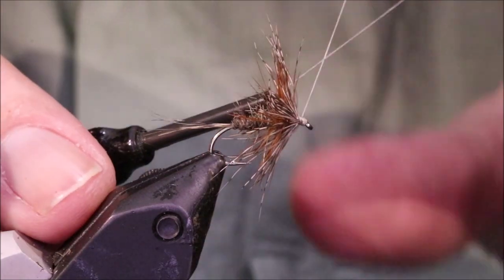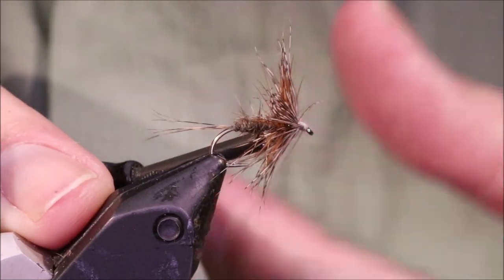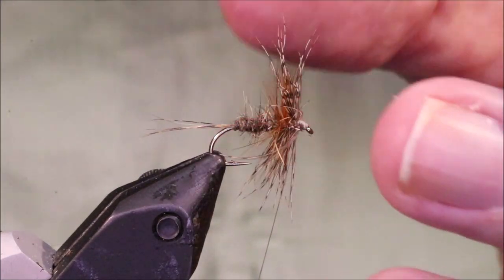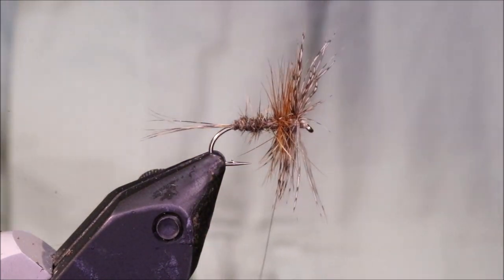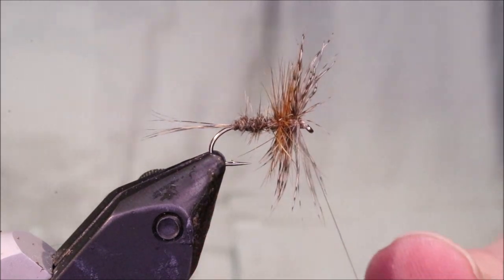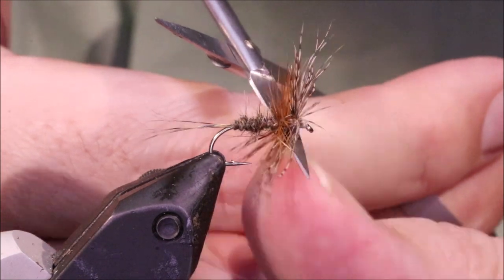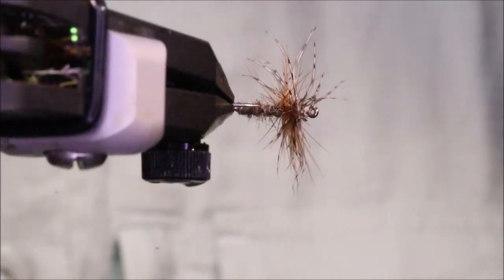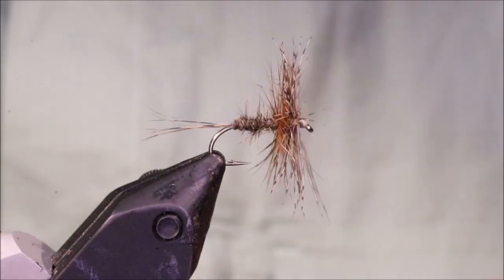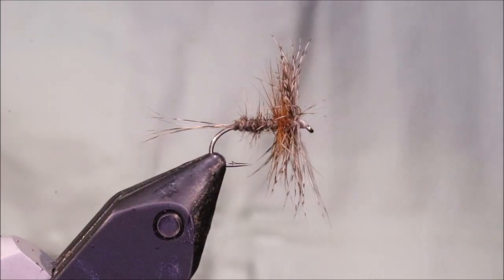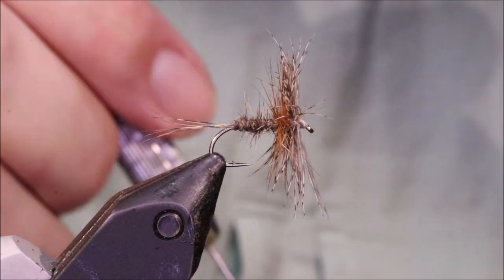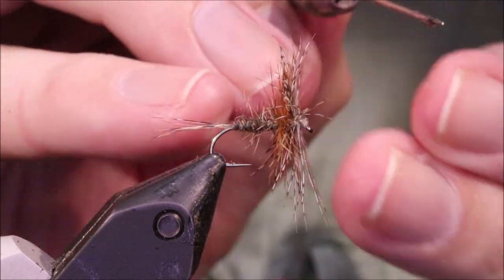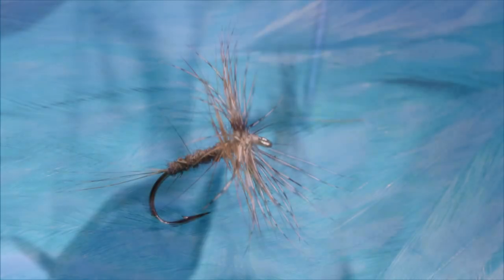So I'll just whip finish this by hand. And there you go. That's the Jingler. As I say, rough. But it's some fish catcher. It really is. It's very effective and well worth having in your box. So I hope that was useful. Hope you enjoyed it. If you did, remember to hit the like button and I'll see you for another video.